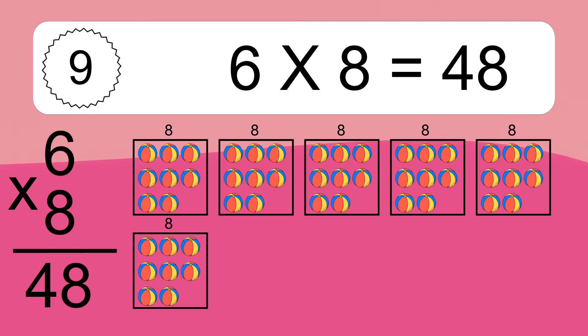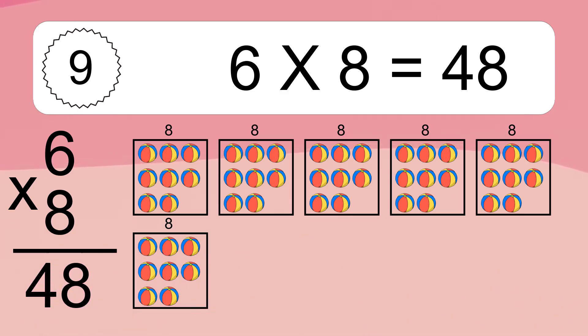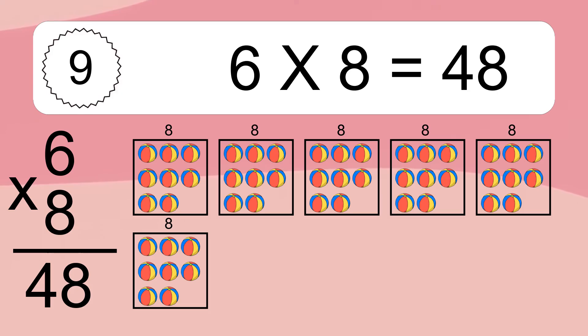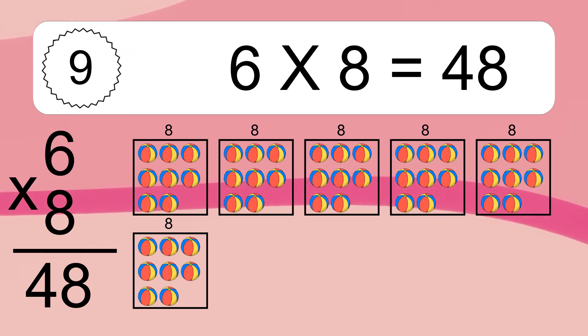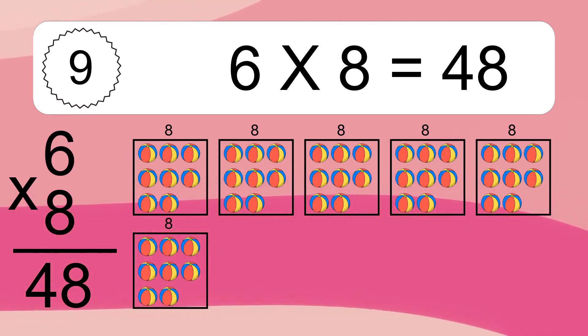6 times 8 equals what? We have 6 boxes, and each box has 8 colorful balls inside. If you count all the balls in all the boxes together, you will have 6 times 8 balls. This equals 48 balls.